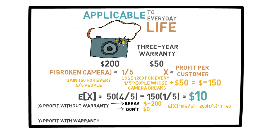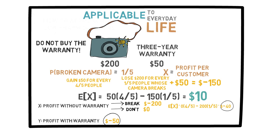However, if I buy the insurance, I don't care what happens. At the end of the day, my profit will still be minus $50. Here, the expected value of X, which is minus $40, is higher than the expected value of Y, which is minus $50. So X is the option I should go with — that is, I should not buy the warranty.